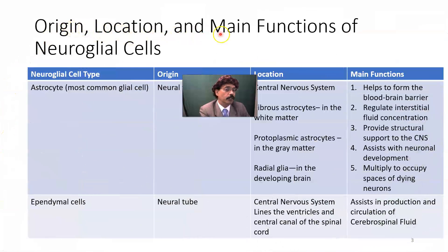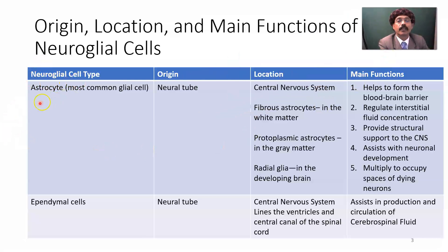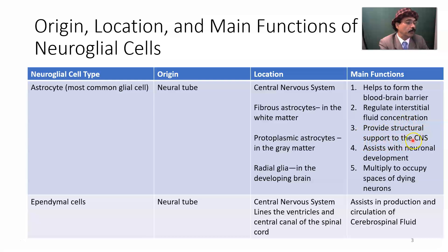We need to learn the origin, location, and main functions of neuroglial cells. The astrocyte is the most common glial cell, originating from the neural tube, located in the central nervous system. It has two types: fibrous astrocyte in the white matter and protoplasmic astrocyte in the gray matter, with radial glia in the developing brain. Functions include forming the blood-brain barrier, regulating interstitial fluid concentration, providing structural support to the CNS, assisting with neuronal development, and multiplying to occupy spaces of dying neurons.